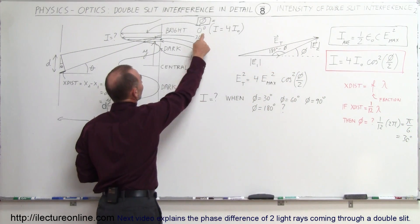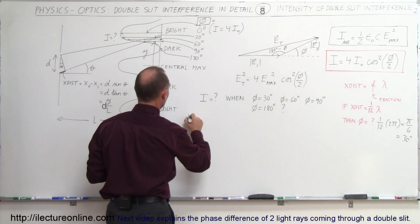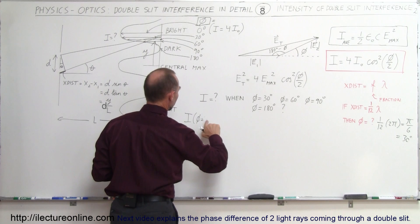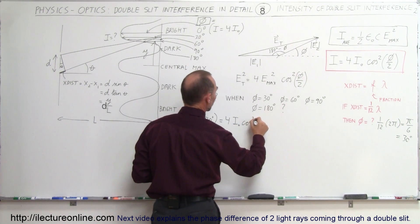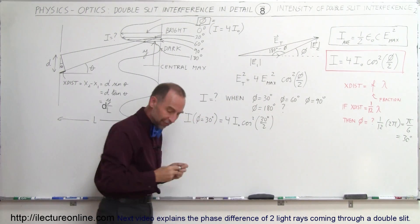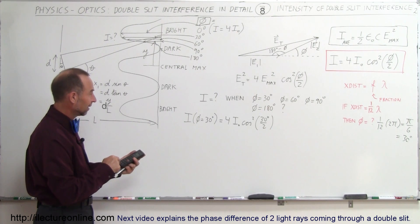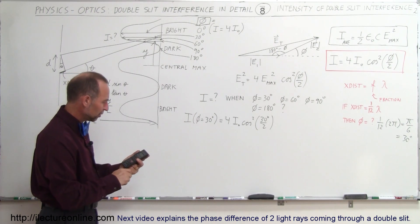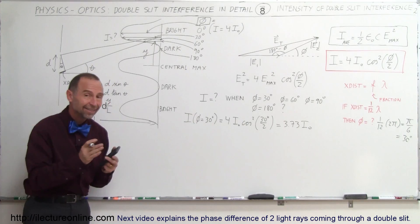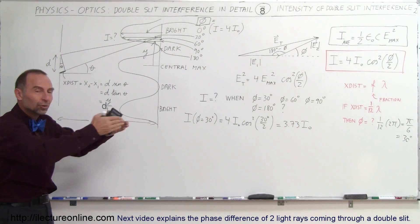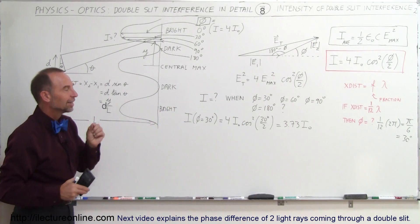In our first example, the phase difference is 30 degrees — one twelfth of a wavelength. The intensity when φ equals 30 degrees is four times the intensity of each individual beam, times the cosine squared of 30 degrees divided by 2, which is 15 degrees. Taking the cosine of 15, squaring it, and multiplying by 4, we get 3.73. So the intensity is 3.73 times the intensity of each individual beam.